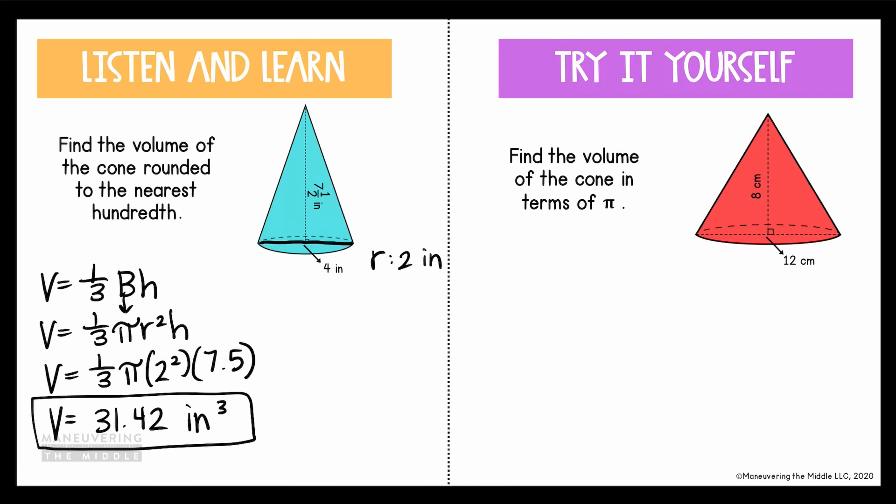Lastly this one asks us to find the volume of the cone in terms of π. Let's highlight that, because it's a little bit different. We'll still start with our formula, 1/3 area of the base times the height. Now in terms of π means that we are going to substitute in all of the values, and we will multiply everything except for π. So here if the diameter is 12, be careful, notice that the radius is 6.